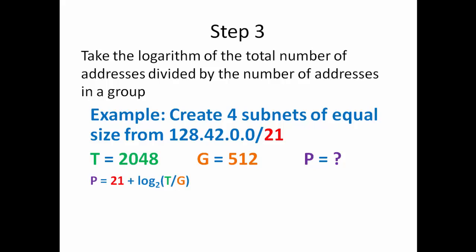So we're going to say P is going to be equal to 21. Where do we get the 21? Well that is the original net mask that we had. Plus the logarithm of 2 of T divided by G, or 21 plus the logarithm of 2,048 divided by 512. We already know that it goes in evenly and we get 4. How do we figure it out from there? What is the logarithm of log 2, 4?